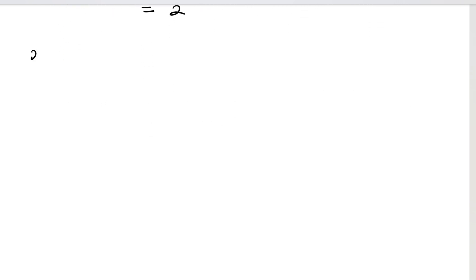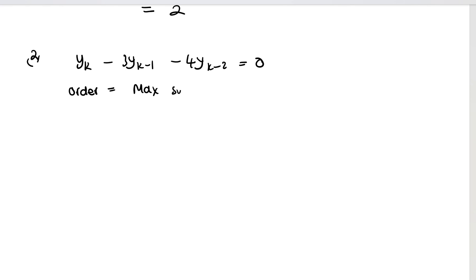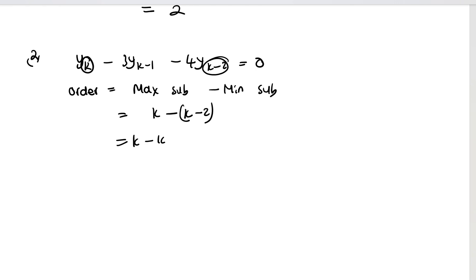Let's have a second example: y_k minus 3·y_(k-1) minus 4·y_(k-2) equals 0. What is the order of this recurrence relation? The order is the maximum subscript minus the minimum subscript. The maximum subscript is k and the lowest is k-2, so the order equals k minus (k-2), which gives 2. The order is again 2.